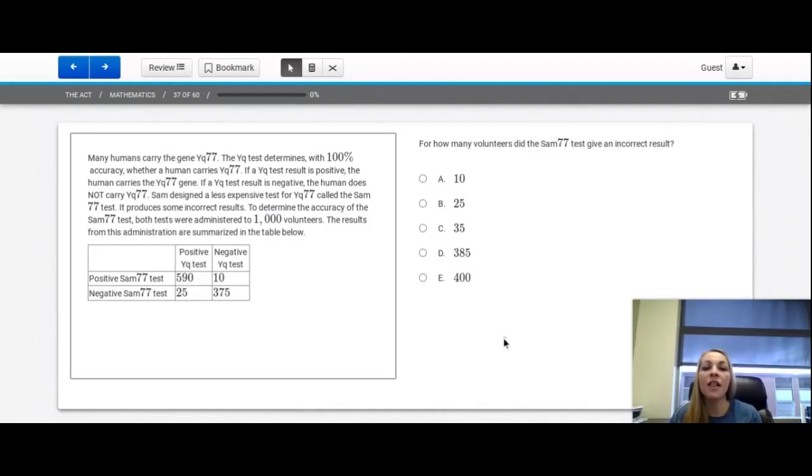Question number 37. For how many of the volunteers did the SAM77 test give an incorrect result? Let's recall that the YQ test determines with 100% accuracy. In this table, we are looking to see where the results for both of the tests match. We had a positive SAM77 test and a positive YQ test, so this one checks out the 590. Where there are both negative, that will also check out. So right here with a negative YQ test and right here with a SAM77 test. So what we are looking at are the places that it doesn't match, and that's here and here. So we're going to add 25 and 10 together, and that gets us 35. So there were 35 either false positives or false negatives.